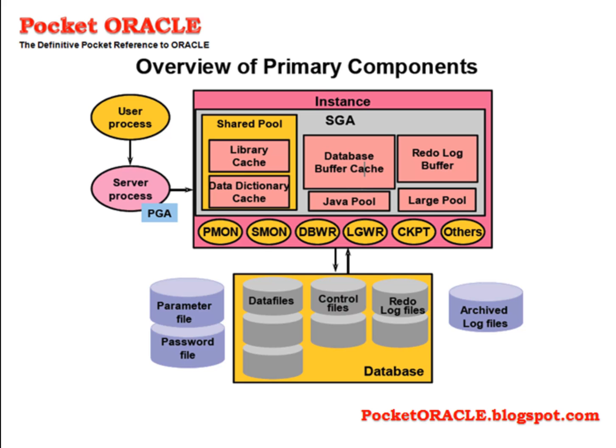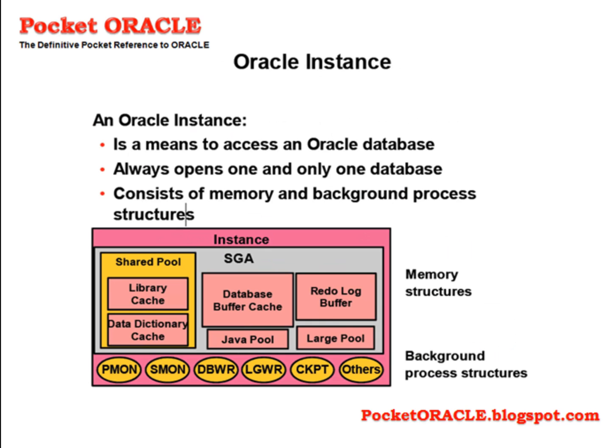By contrast, the database, once created, persists indefinitely until you deliberately delete the files that compose it. An Oracle instance is a means to access an Oracle database. It always opens one and only one database. It consists of memory: the SGA, the fundamental component of an Oracle instance, the PGA, and background process structures.